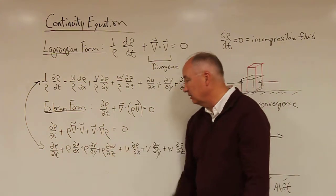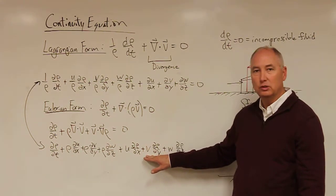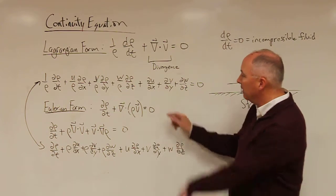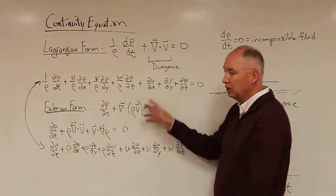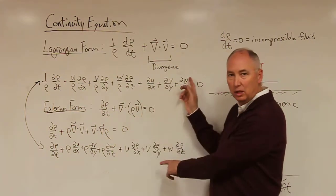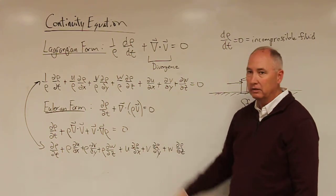And then you have the v dot grad rho, u partial rho over partial x, v partial rho over partial y, and w partial rho over partial z. And you'll see that if we just do a little bit of divide everything by density, you would end up with the exact same equation for both the Lagrangian form and the Eulerian form.